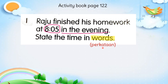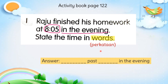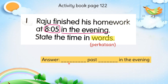Tulis dalam perkataan. Second way — cara kedua — you can write like this: how many minutes past 8 in the evening. Anda juga boleh tulis macam ni — berapa minutes past 8 in the evening.